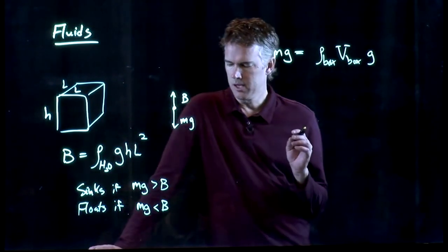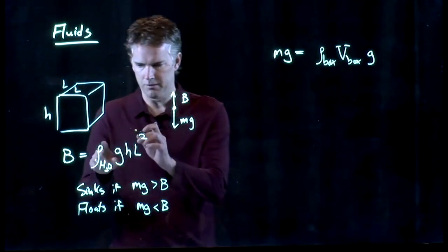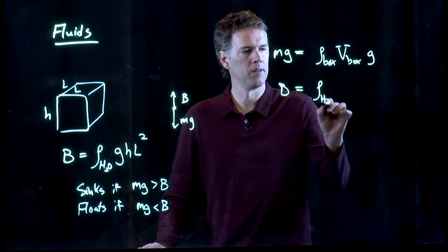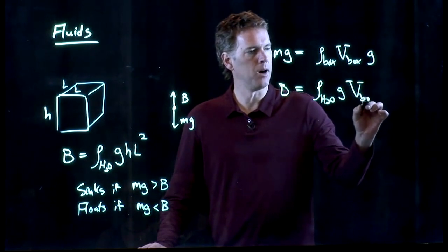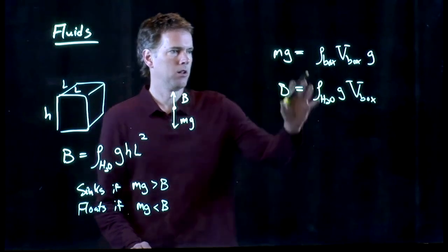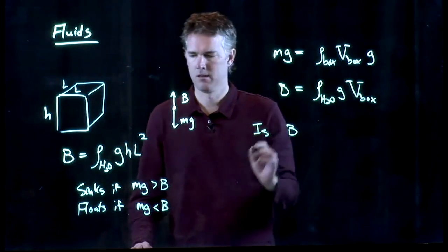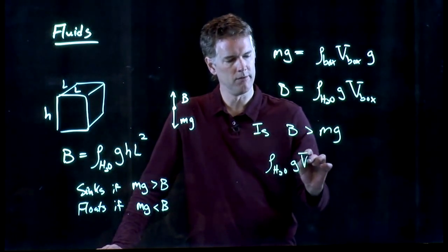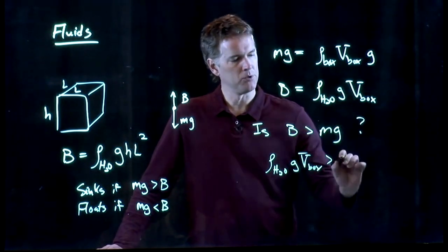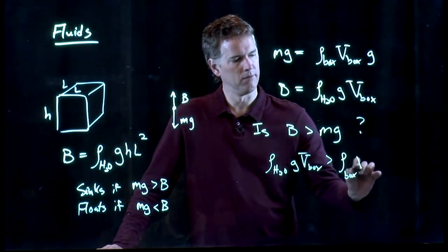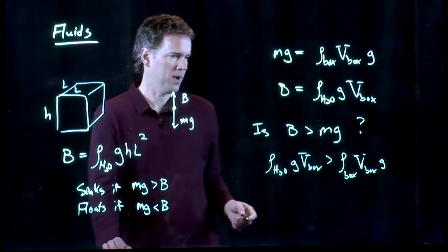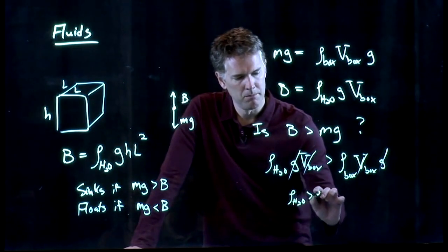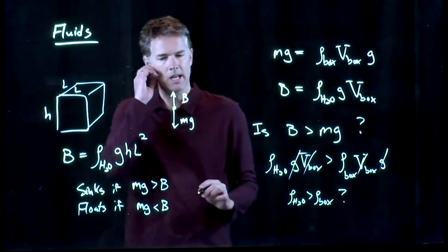But we also know that the buoyant force, which is GHL squared, that is the same as volume of the box. And so, now we're just going to see which one is bigger. Is B going to be bigger than MG, or is B less than MG? Rho H2O, G, volume of the box. Is that bigger than MG, which is rho for the box, volume of the box, times G. And look what happens. G cancels out, V box cancels out, and we end up with rho H2O bigger than the box or not. It's all about the densities.